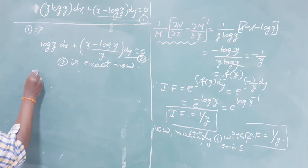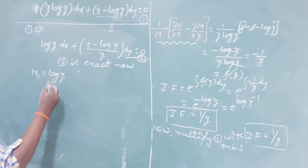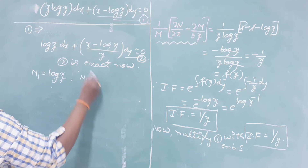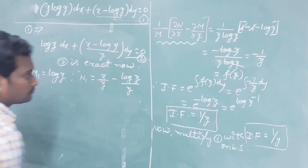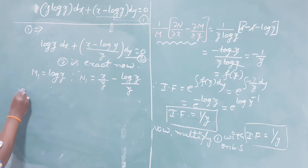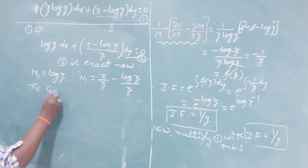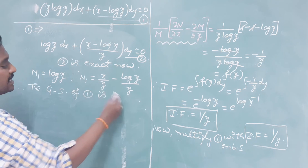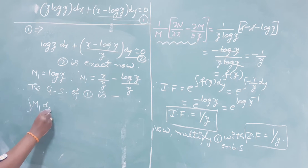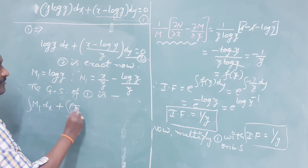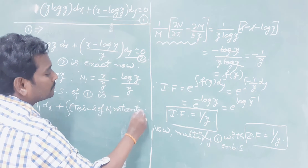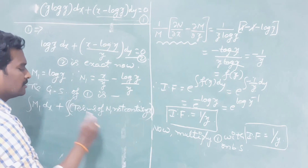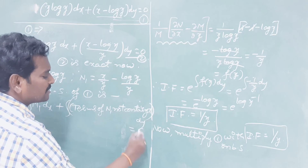The new terms are M1 = log(y) and N1 = x/y - log(y)/y. The general solution of the exact equation is: ∫M1 dx + ∫(terms of N1 not containing x) dy = c.